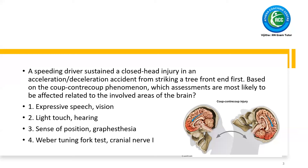Can you see the screen? Read the question. A speeding tiger sustained a closed head injury in an acceleration-deceleration accident from striking a tree. Based on the coup-contrecoup phenomenon, which assessments are most likely to be affected related to the involved area of the brain?